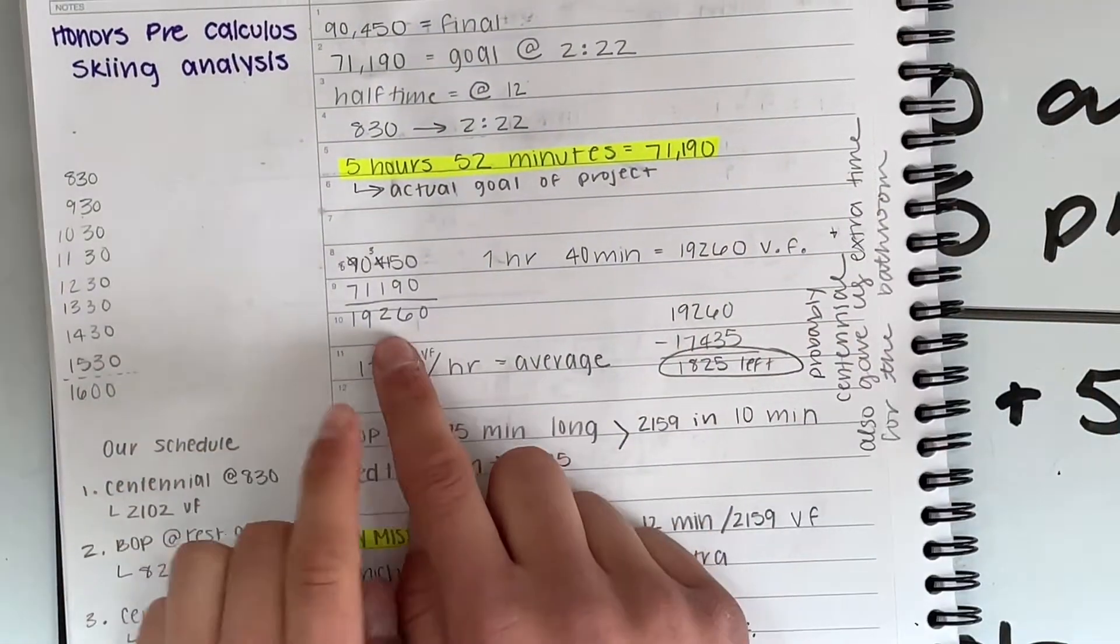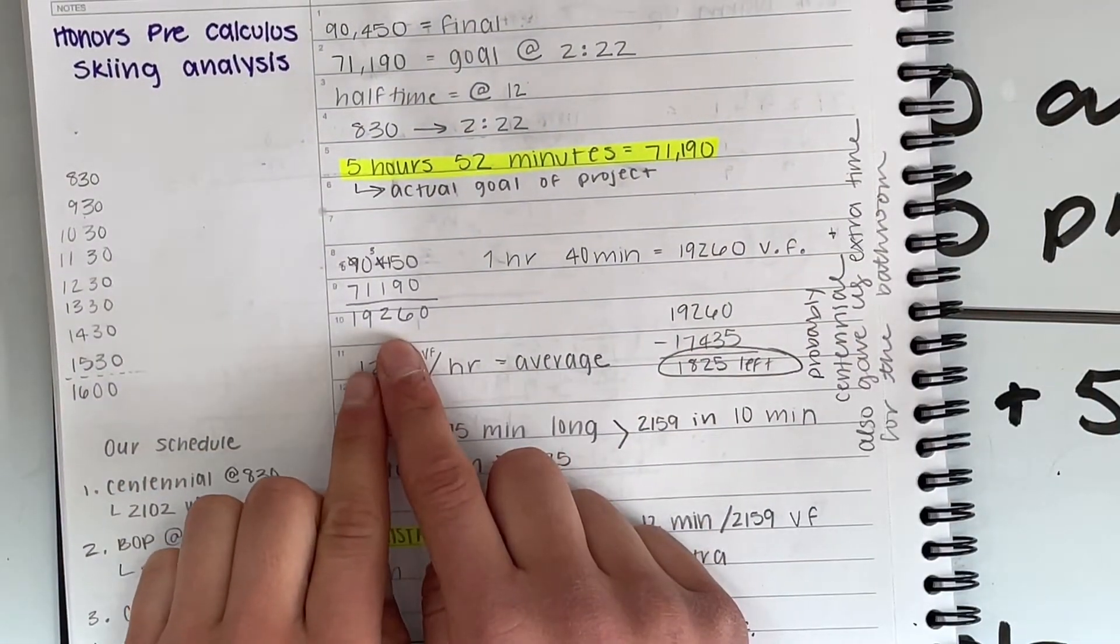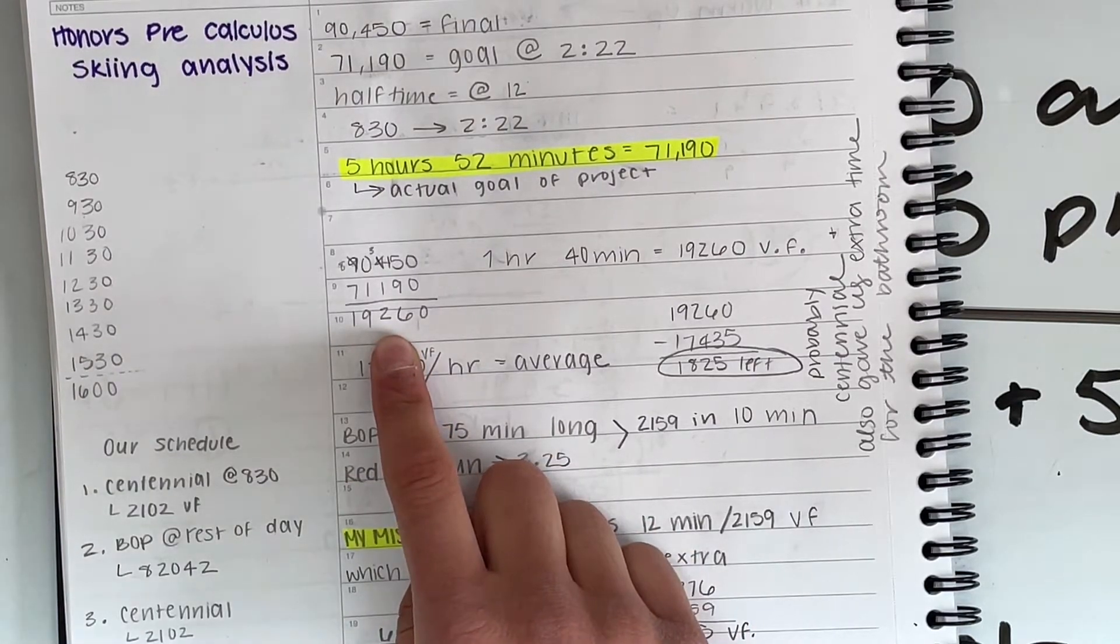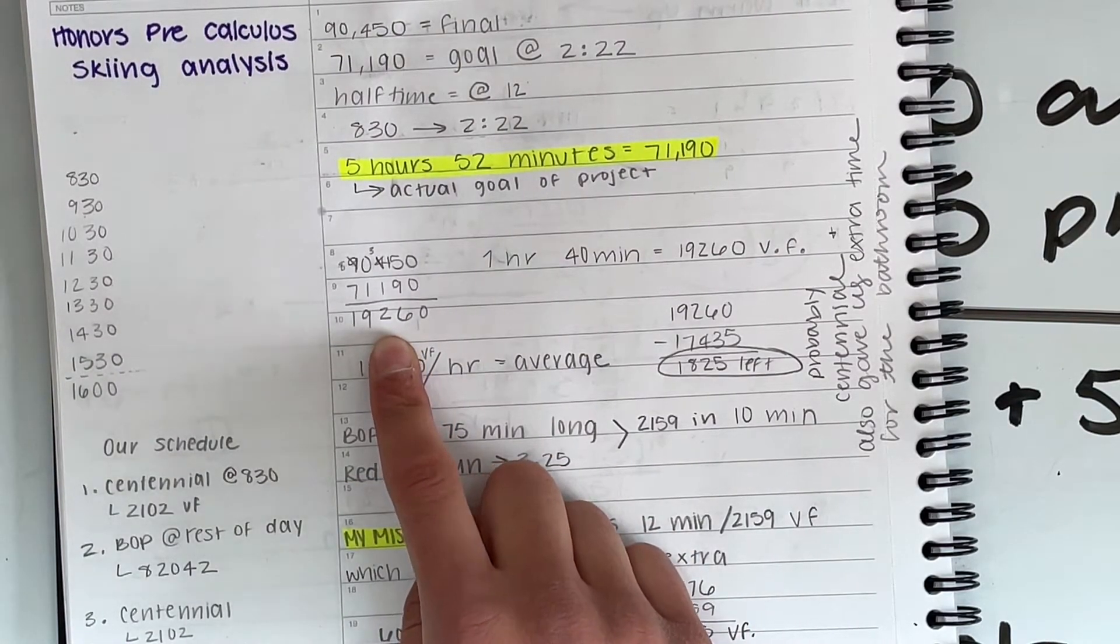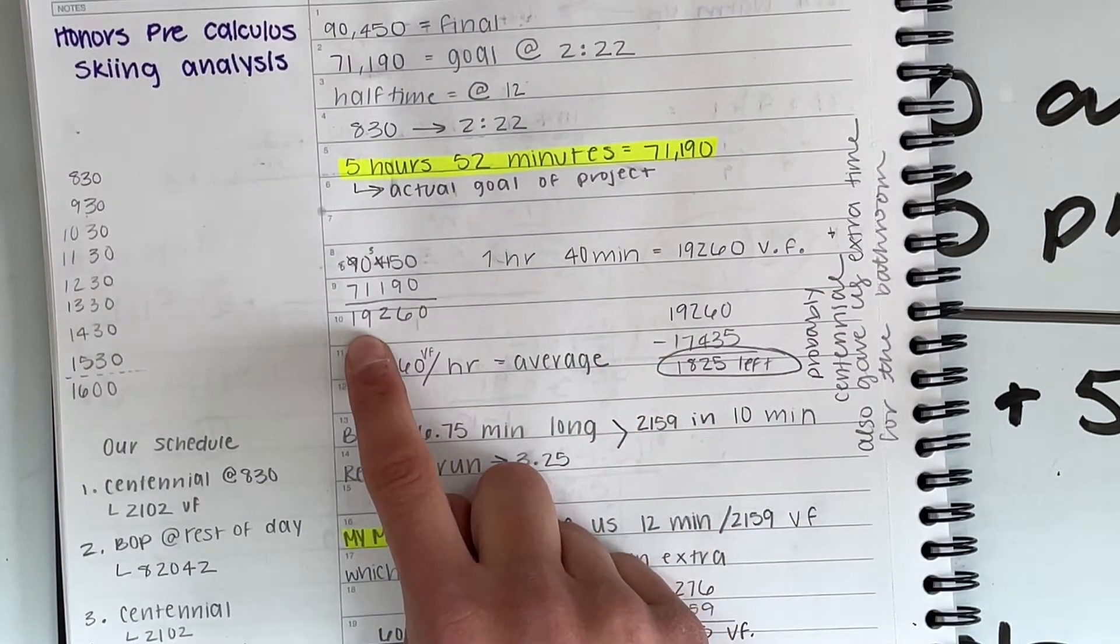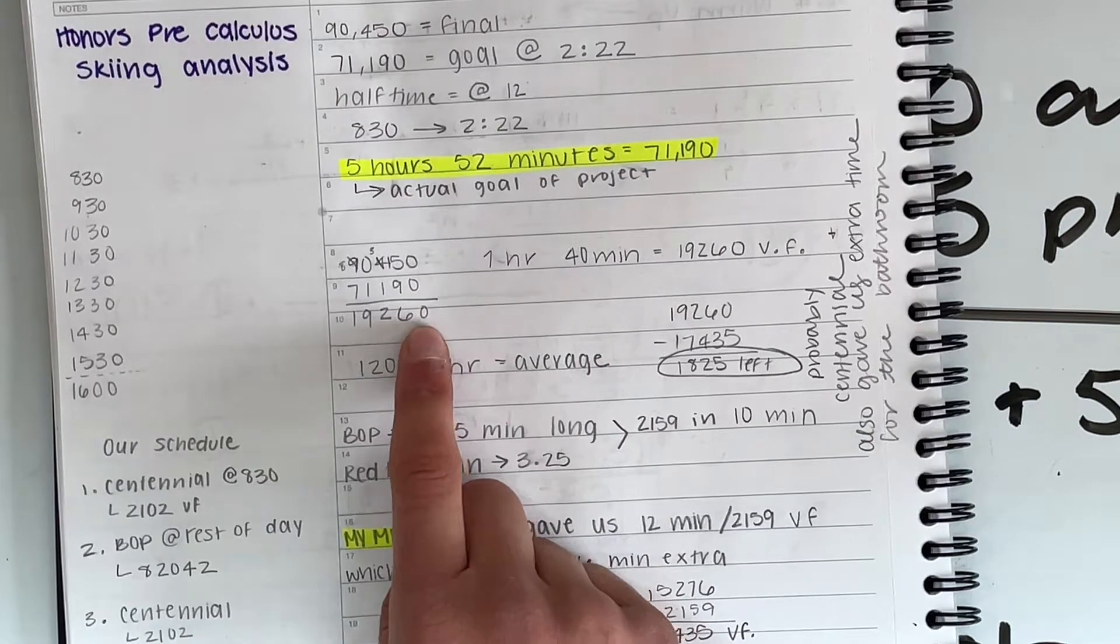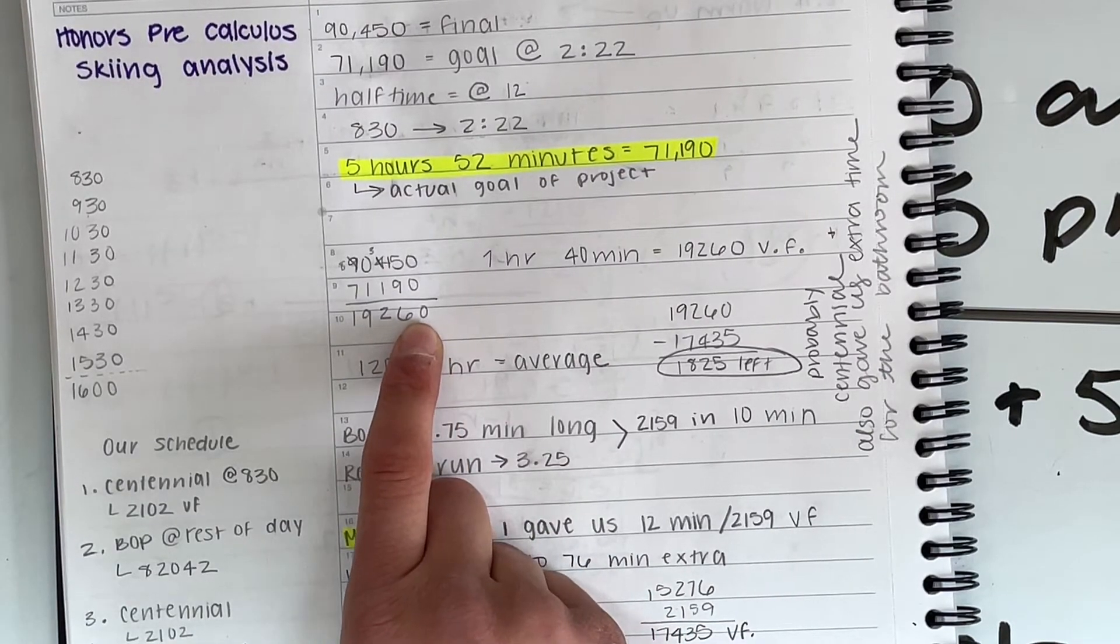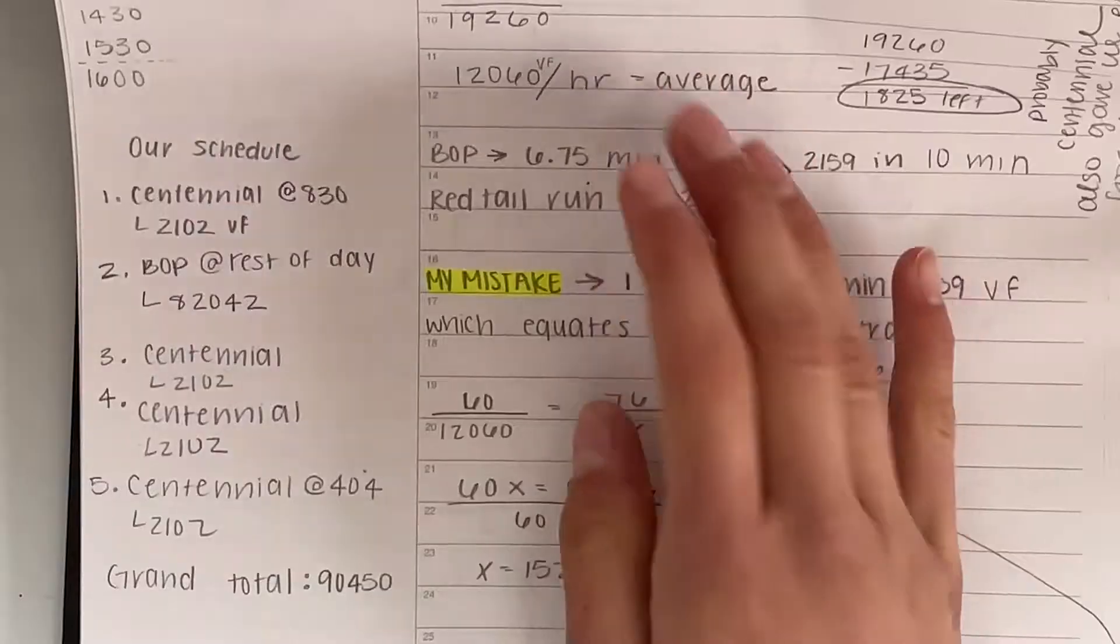Now this is how you can, how I could tell the math I used. This is how I was able to figure out how many more vertical feet we needed in the hour and 40 minutes we had left. So we still needed to get 19,260 vertical feet right here for now. But let's look at the schedule Carter and I did.